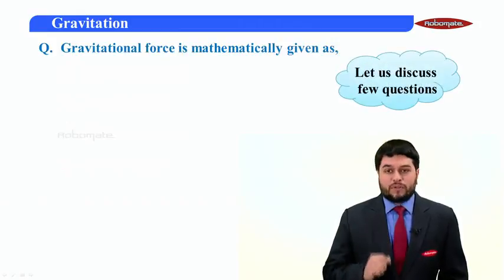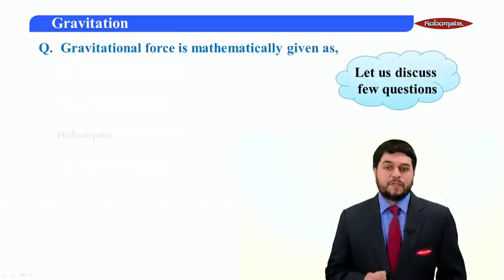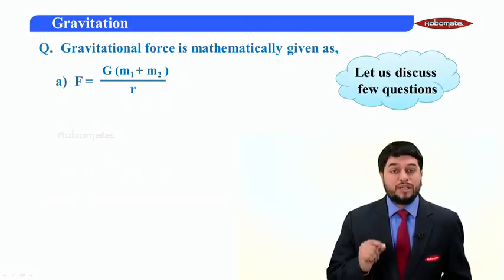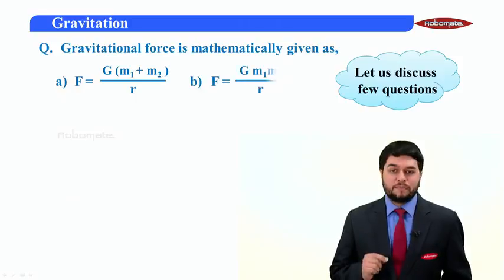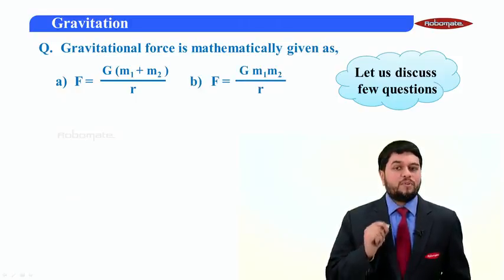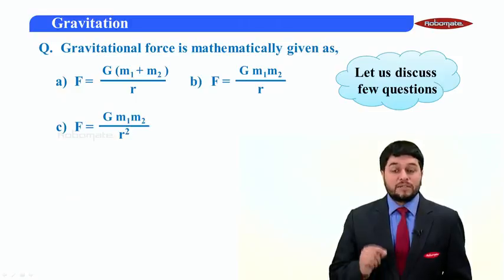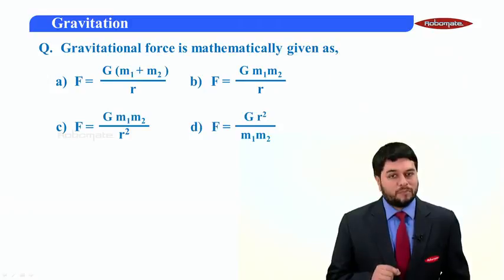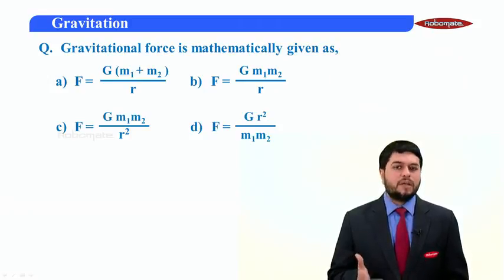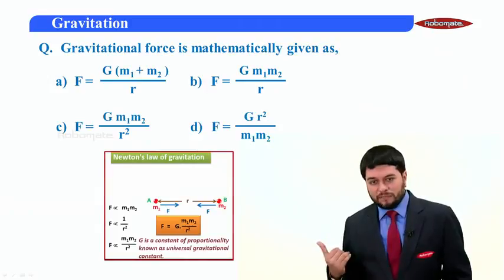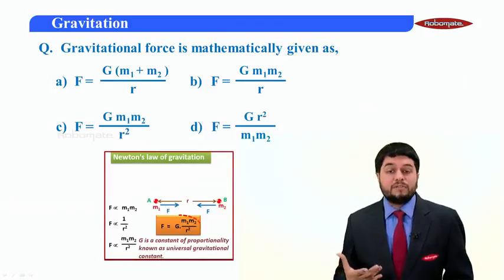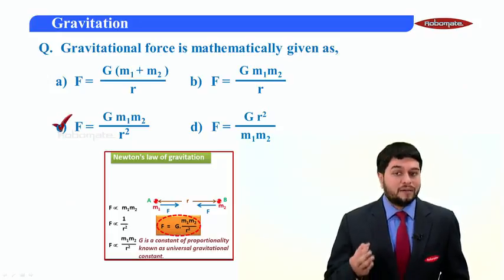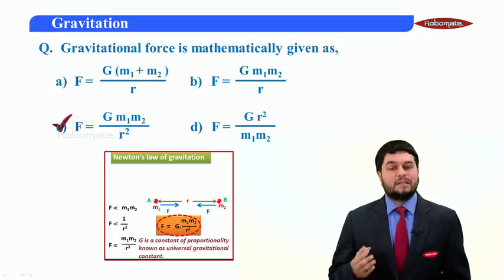Let's see some more questions. Another one for you. Gravitational force is mathematically given as capital F equal to G M1 plus M2 upon R, or equal to G M1 M2 upon R, or is it G M1 M2 upon R square, or is it given as G R square upon M1 M2? A very fundamental question. I hope you remember the answer. You remember this slide? We just now did it. Yes, the gravitational force is always given as capital G M1 M2 upon R square. Your answer is in this case C.